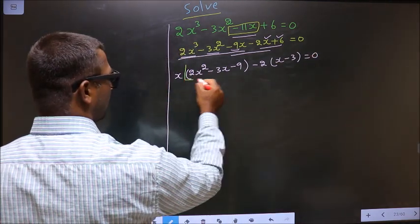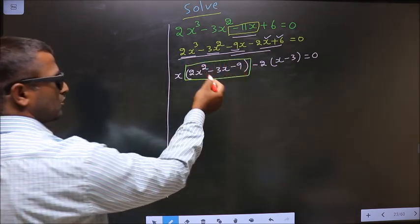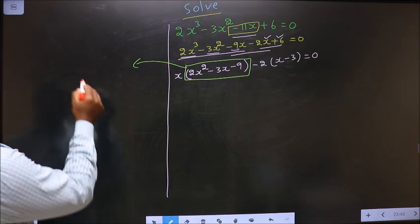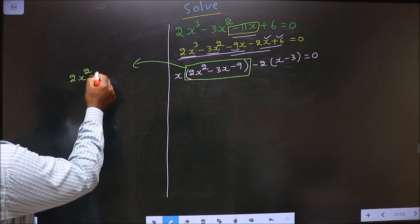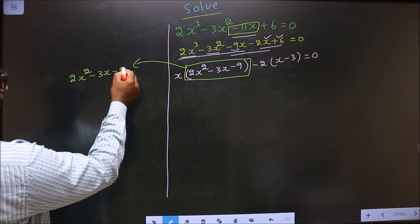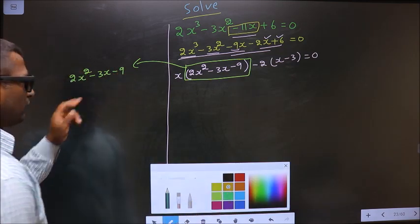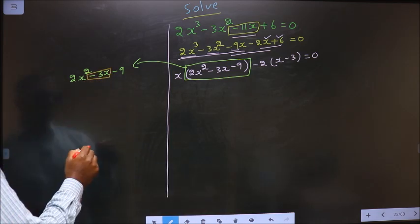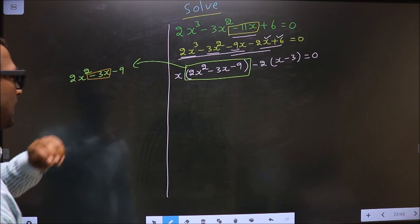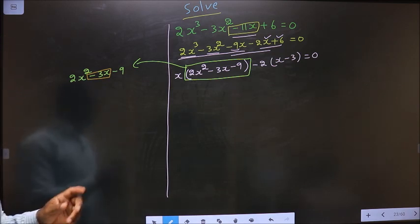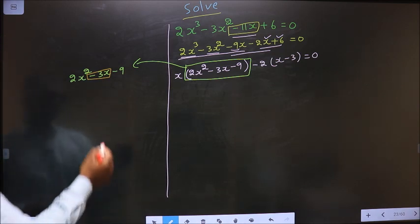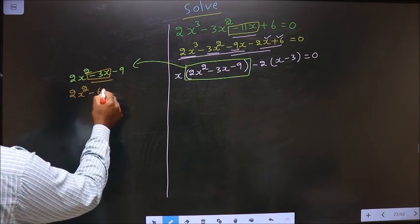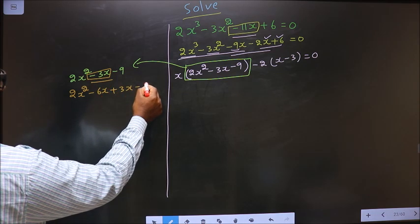Now I got a quadratic, so I will factorize this quadratic equation: 2x² - 3x - 9. To factorize this I should change the middle term, that is minus 3x. So 2 into 9 is 18. 6 into 3 is 18. 6 minus 3 is 3. So now in place of minus 3x I write minus 6x plus 3x minus 9.